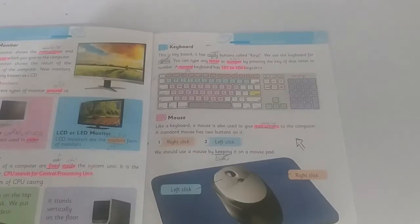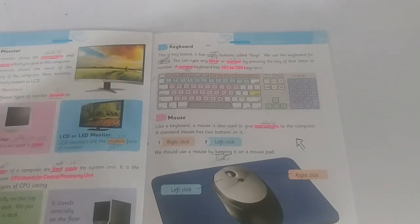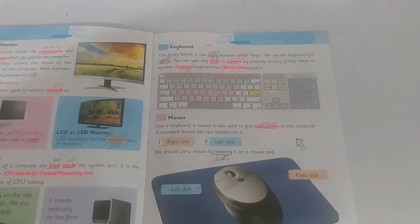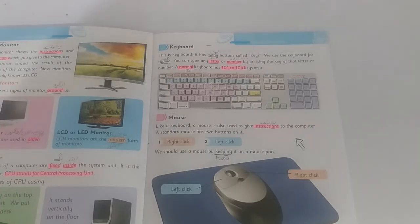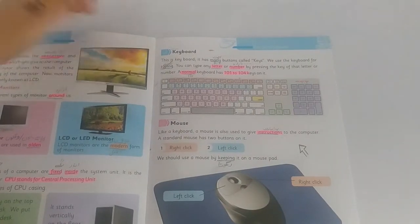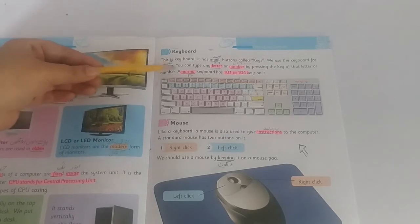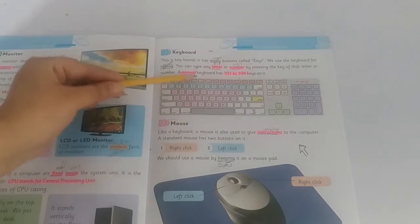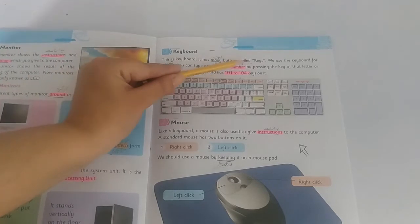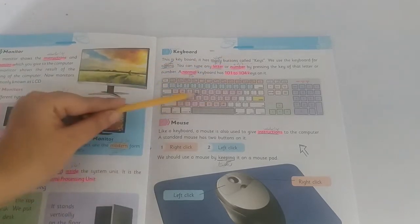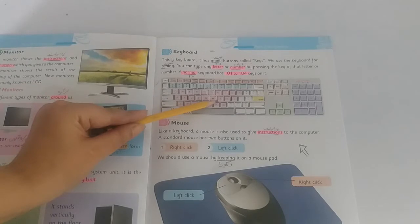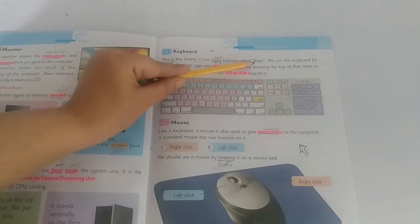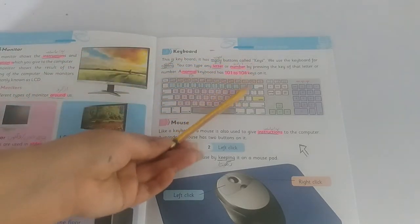Chapter 1: Parts of Computer, page number 5. It is the second week's lecture. Topic: Keyboard. What is a keyboard? The keyboard has many buttons called keys. Ye keyboard hai, is ke upar bohot saare buttons lage hote hain, jis ko hum keys kehte hain.